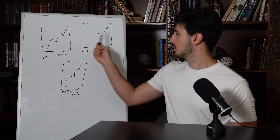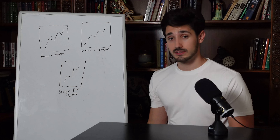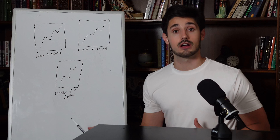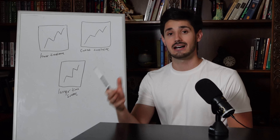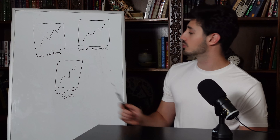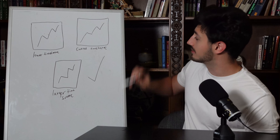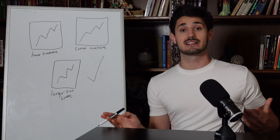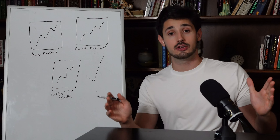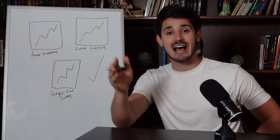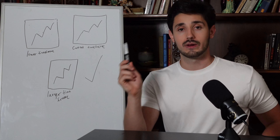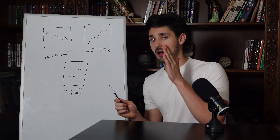In the third example: lower time frame uptrending, current time frame uptrending, larger time frame uptrending. Are we taking this trade? Yes — because all time frames are aligned and telling us the same information. Lower, current, and larger are all trending higher, so we will take this trade. This isn't difficult — it just requires the discipline to check different time frames before entering. I guarantee that once you start doing this, half the trades you used to take you won't take anymore. Alignment is the magic word.